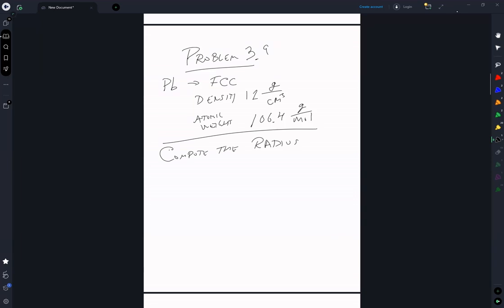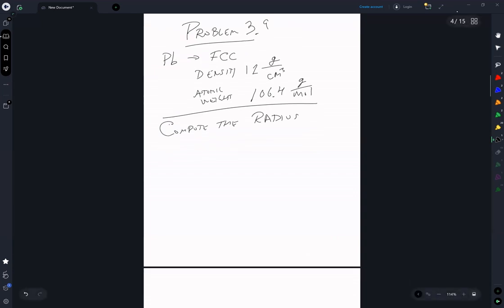Okay. So we know because it's FCC, there's four atoms per cell.